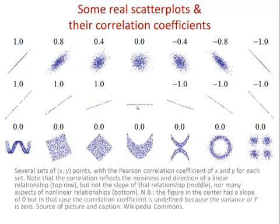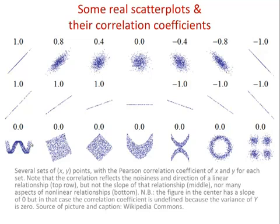It's only when the line gets completely horizontal that the correlation approaches zero — in fact at that point you can't even calculate a correlation because there's literally no variability in one variable. Looking at the bottom line, this makes the point that correlations only test for linear relationships — a straight-line relationship. You can get other types of relationships, like a curvy up-and-down one, where there obviously is a relationship but it's not linear. If you put that into a correlation you'd get zero, which would incorrectly suggest no relationship. You'd simply need a different type of statistic to detect that curvy relationship.